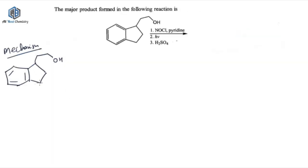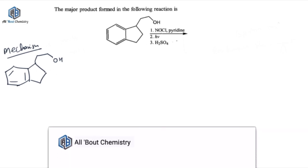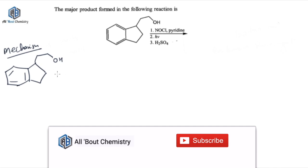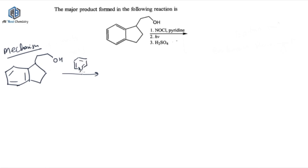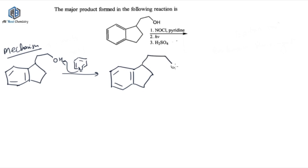We'll start with the mechanism. This is the molecule given to you. In the first step you are treating it with pyridine and NOCL. Pyridine being a base will take the acidic proton from this molecule. The most acidic proton is the OH hydrogen — the hydrogen of this hydroxy group — and this hydrogen will be abstracted by pyridine.